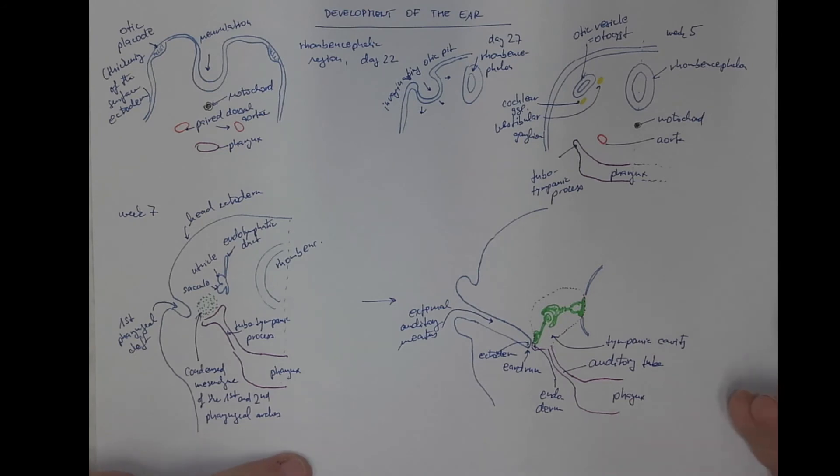In reality, it's much more complicated. A significant part of the tympanic cavity is lined with cells derived from the neural crest, but that's not the interest here now.